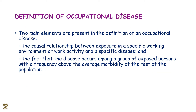Two main elements are present in the definition of occupational disease. One is the causal relationship between the exposure in a specified working environment or work activity and a specific disease — there is a basic cause-and-effect relationship. Second is the fact that the disease occurs among a group of exposed persons only, specific to such kinds of industries, activities, or work, with a frequency above the average morbidity of the rest of the population. That is what defines occupational disease.